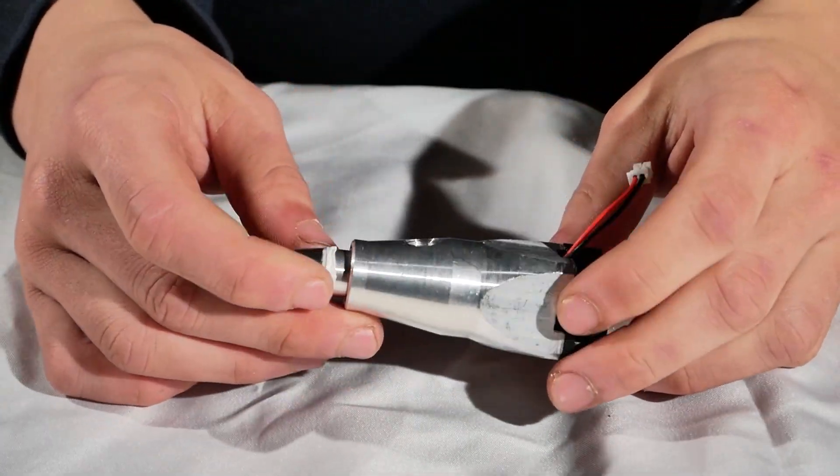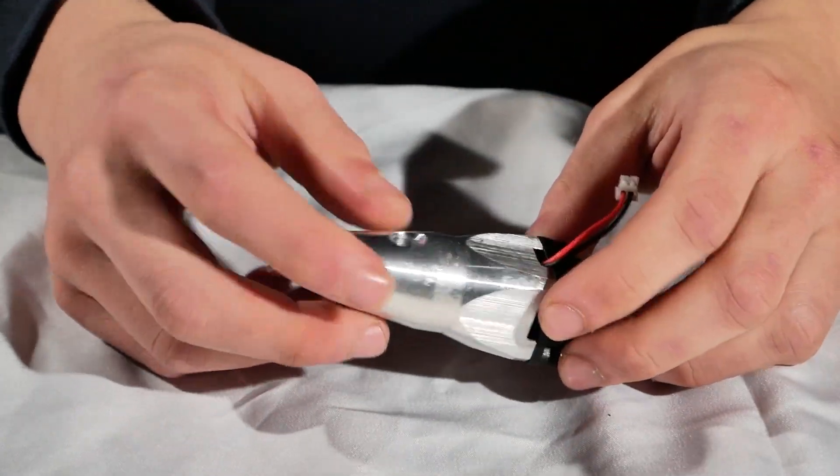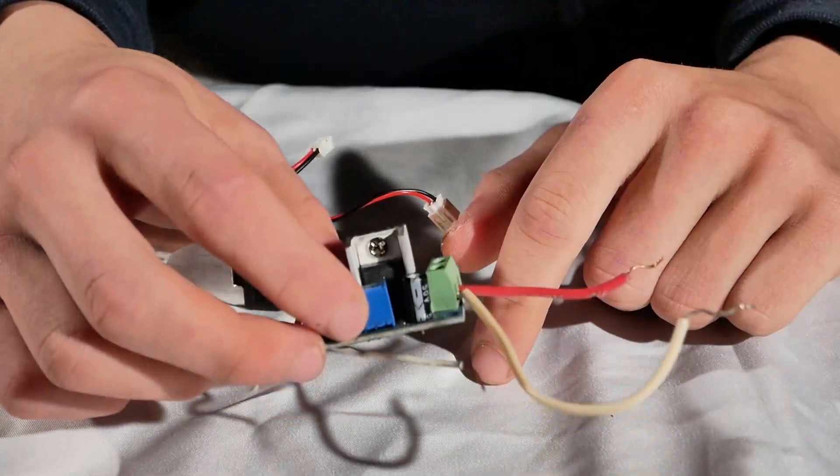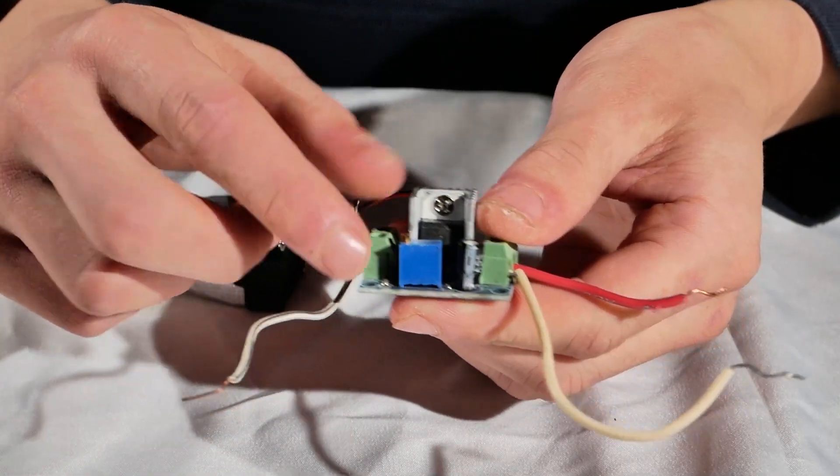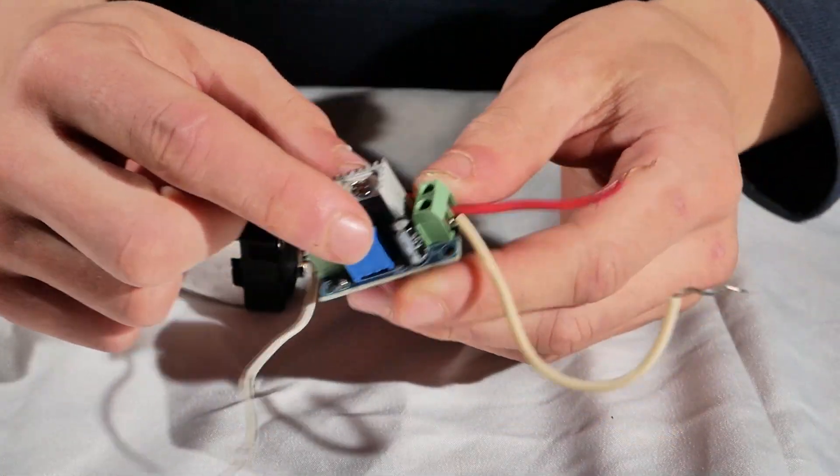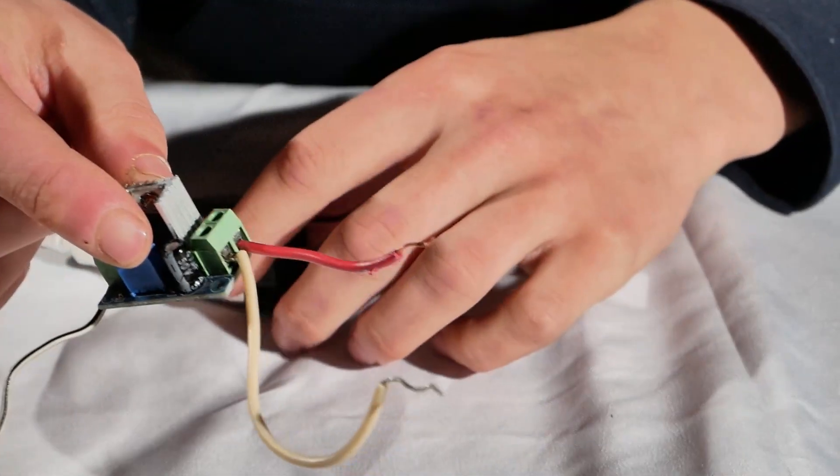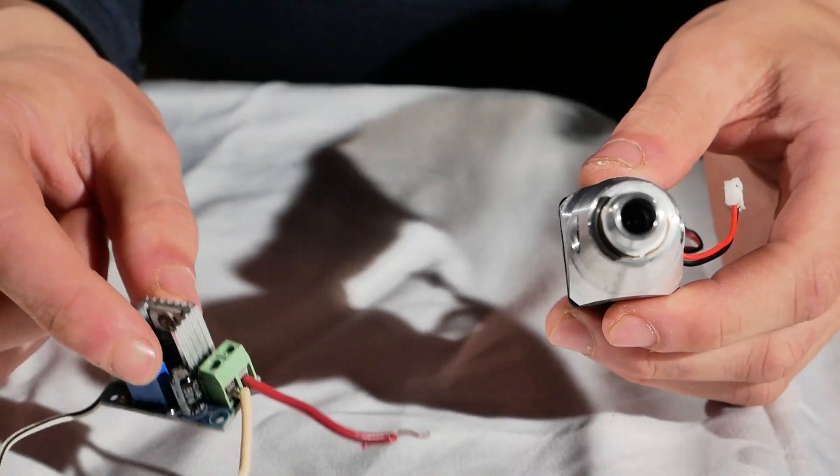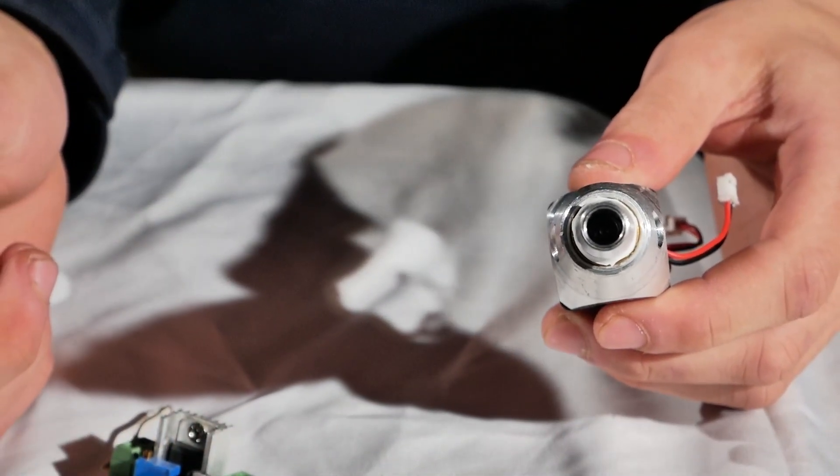I'm assuming this thing takes 5 volts, but I really don't want to risk it. So we're going to get a little step down converter. This is a little 10 watt step down converter. What it does is it takes 12 volts in and converts it to 4.2 volts. And it's also adjustable here. I chose 4.2 volts because most lasers run on 18650 cells, and the max voltage of those is 4.2 volts.